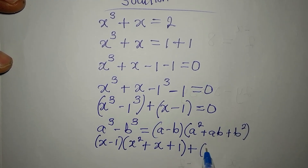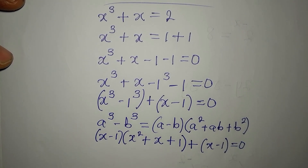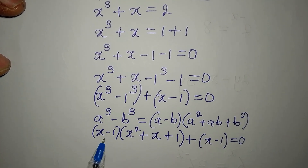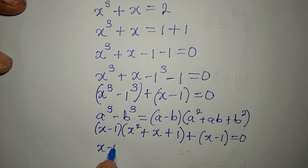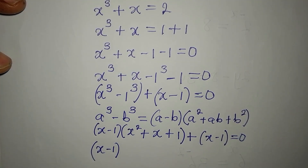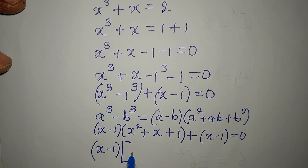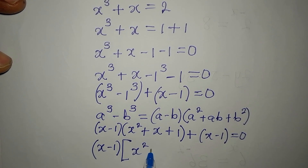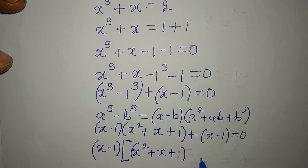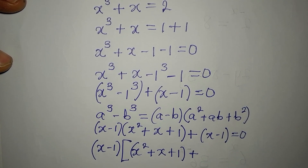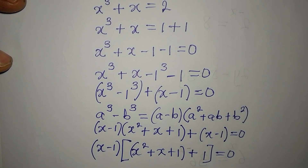We then proceed to the second grouped term, x minus 1, and set everything equal to 0. Notice that x − 1 appears in both parts, so we factorize: (x − 1) is the common factor, and x² + x + 1 is left inside the first bracket, with the second term (x−1)/(x−1) = 1 added, giving (x − 1)(x² + x + 1 + 1) = 0.